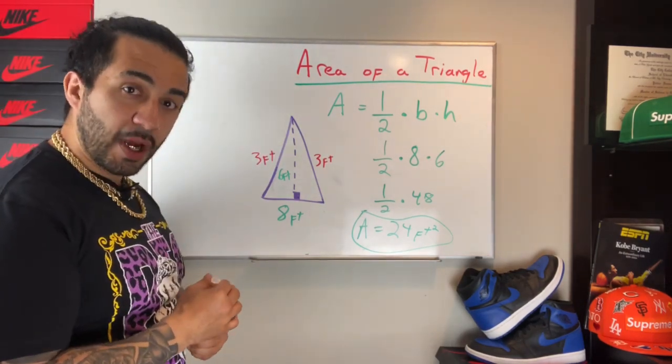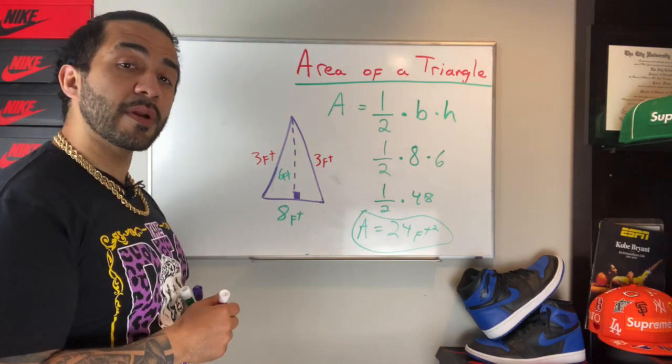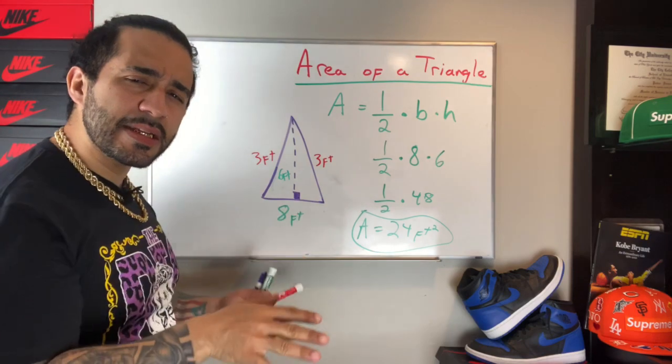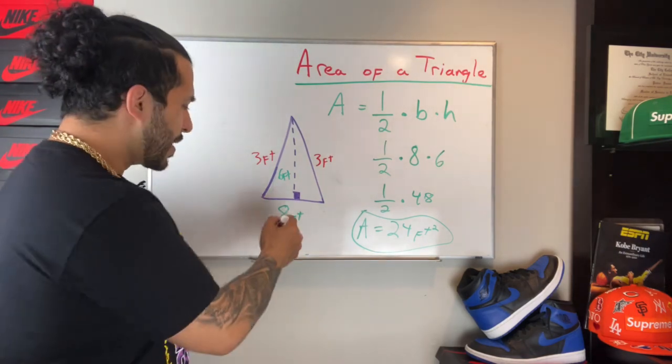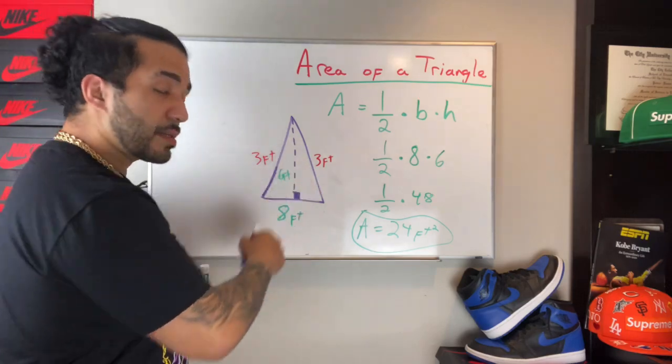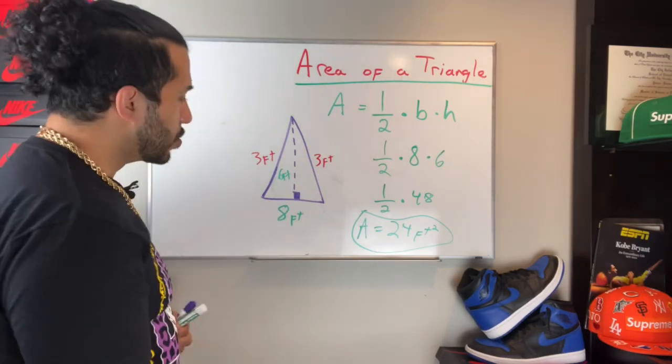Remember, perimeter is the outside and it's addition. Easy peasy. Eight plus three is eleven, and eleven plus three is fourteen. So the area is 24 but the perimeter is 14 feet.